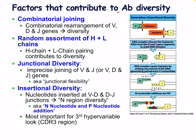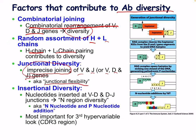Further factors contributing to antibody diversity include: combinatorial joining through combinatorial rearrangement of V, D, and J genes; random assortment of heavy and light chains contributing additional diversity; junctional diversity from imprecise joining of V, J or V, D, J genes (junctional flexibility); and insertional diversity where nucleotides inserted at V-D or D-J junctions result in N-region diversity through N-nucleotide and P-nucleotide addition. The most important site for third hypervariable variation is the CDR3 region.